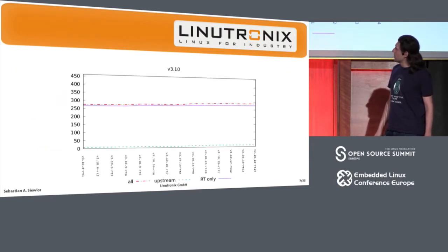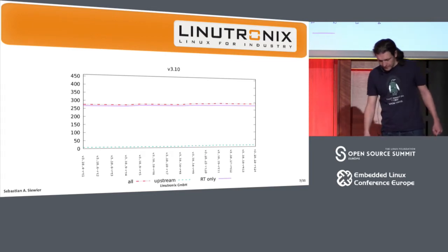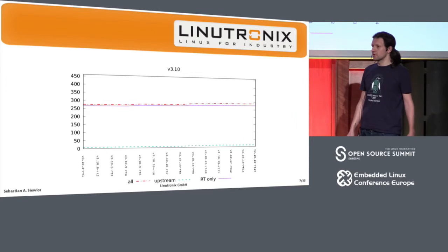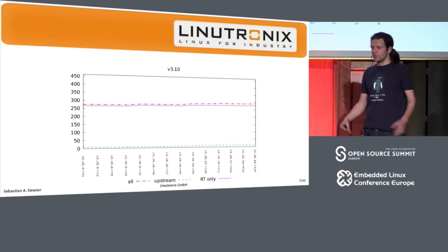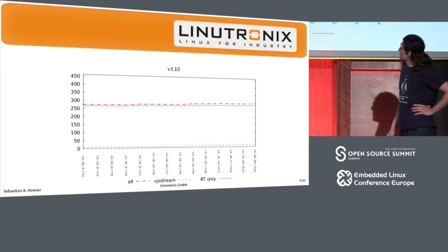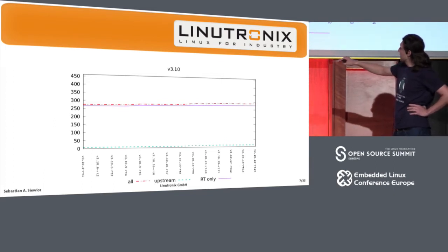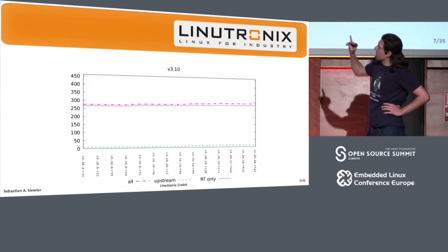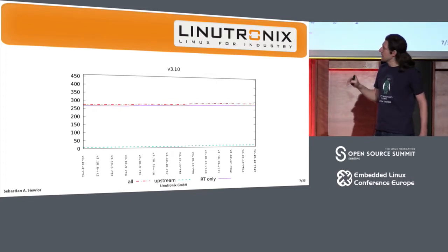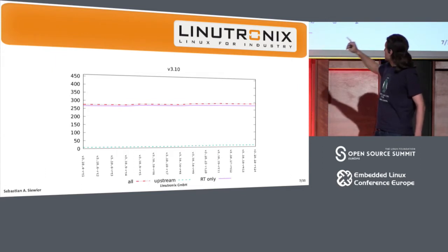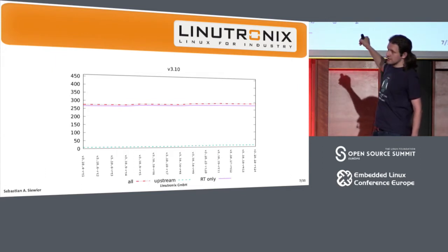Now I'm going over the patch statistics we have. A lot of people say that the patch count is not the main measure, and that's always the same argument. So what I try to do is give a rough estimation. This graph is for the 3.10 RT patch set. On the left side is the first release I did back then, and on the right side is the last RT release I did for that development cycle.